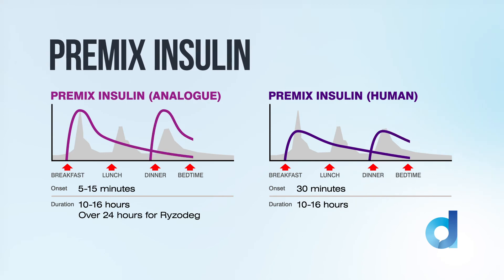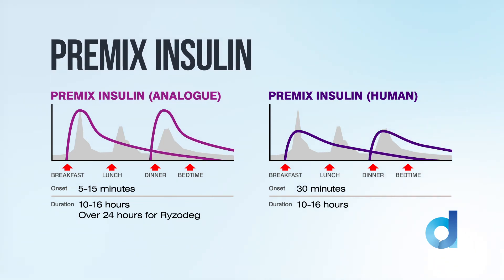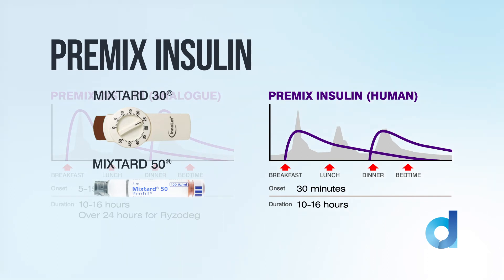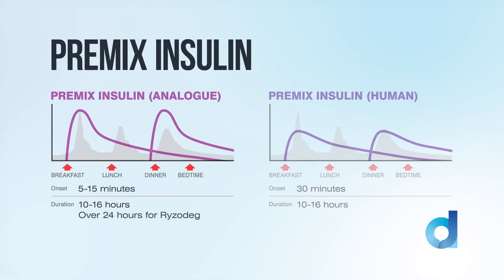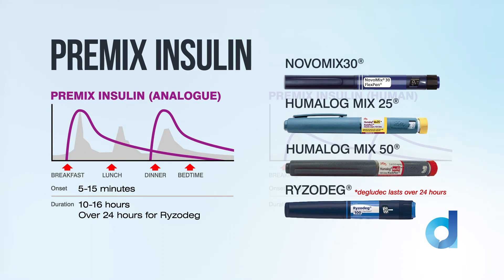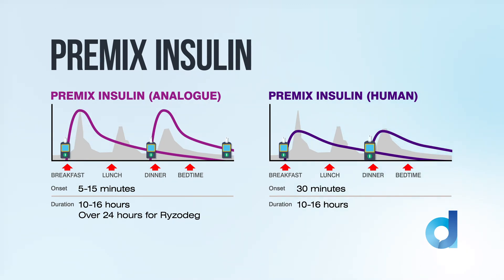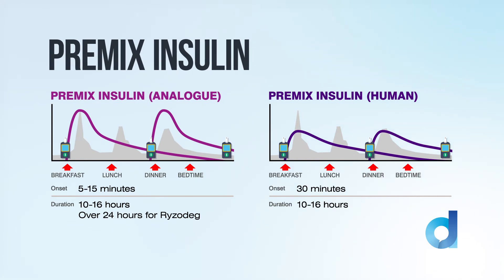The third category is pre-mixed insulins. These combine a bolus or mealtime insulin with a basal or background insulin in one injection. Mixed hard 30 and mixed hard 50, for example, contain 30% or 50% short acting insulin and should be injected half an hour before a meal. The other pre-mixed insulins contain rapid acting insulin and should be given 5 to 15 minutes before a meal. You can check the effect of a pre-mixed insulin by doing a blood glucose level 2 hours after injecting to assess the bolus component, as well as fasting levels before breakfast or overnight to assess the basal component.